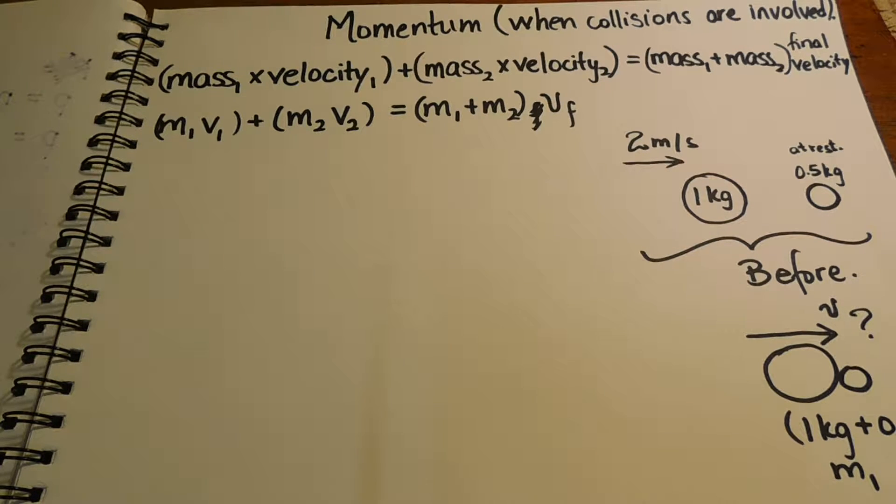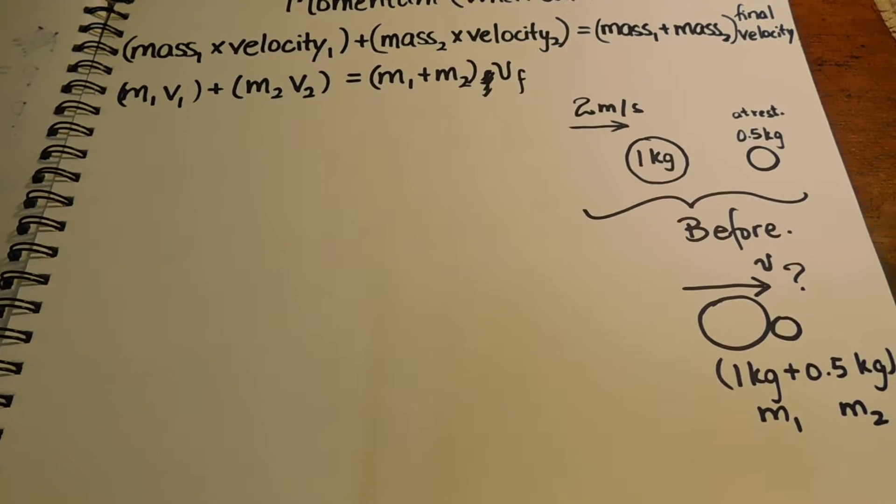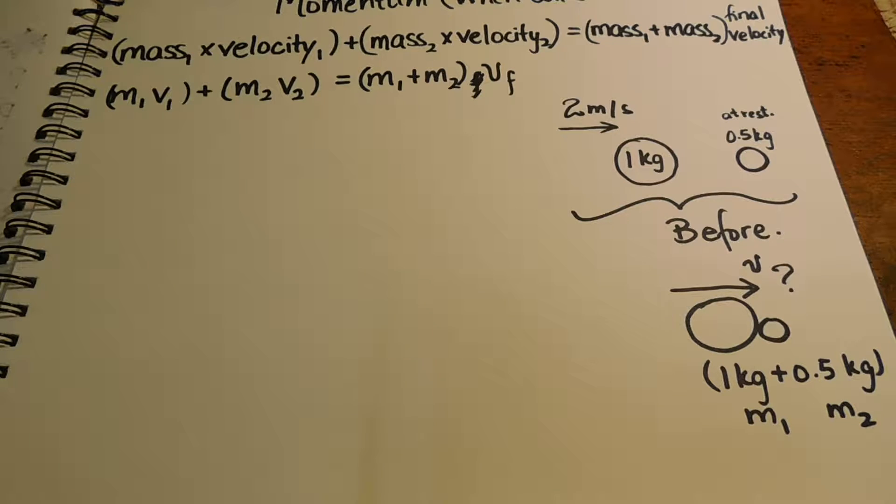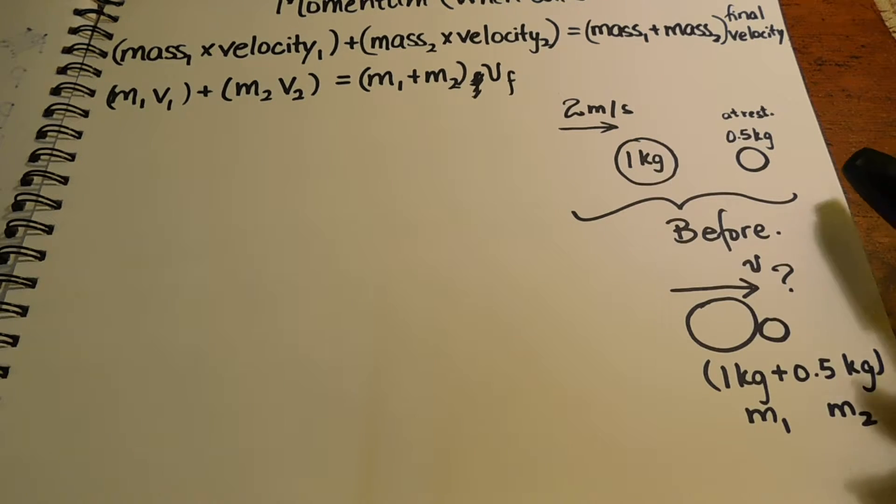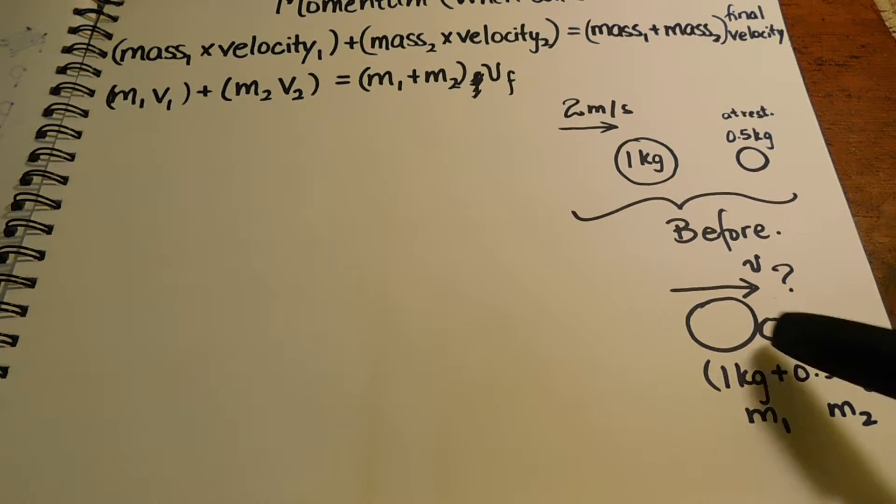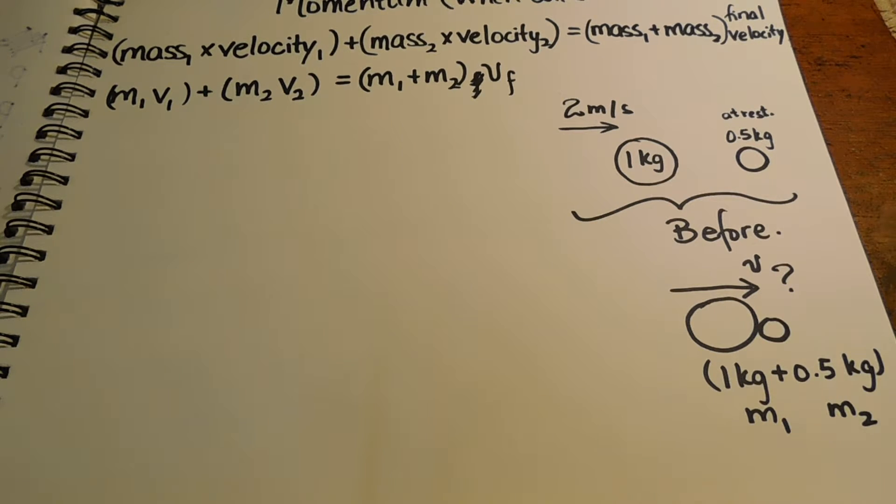This is momentum when you're dealing with collisions. This is probably going to be one of the most complicated equations you're going to find. Usually with momentum, when something collides, you have a bigger body or a smaller body or something of the same mass. It could be either or each way.